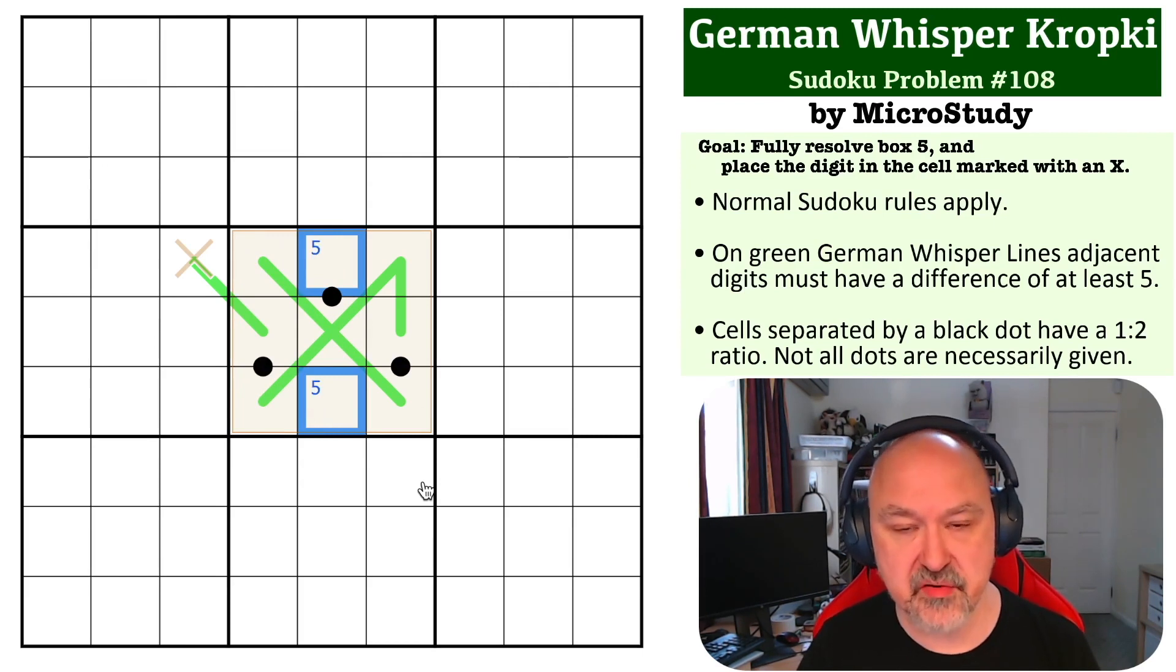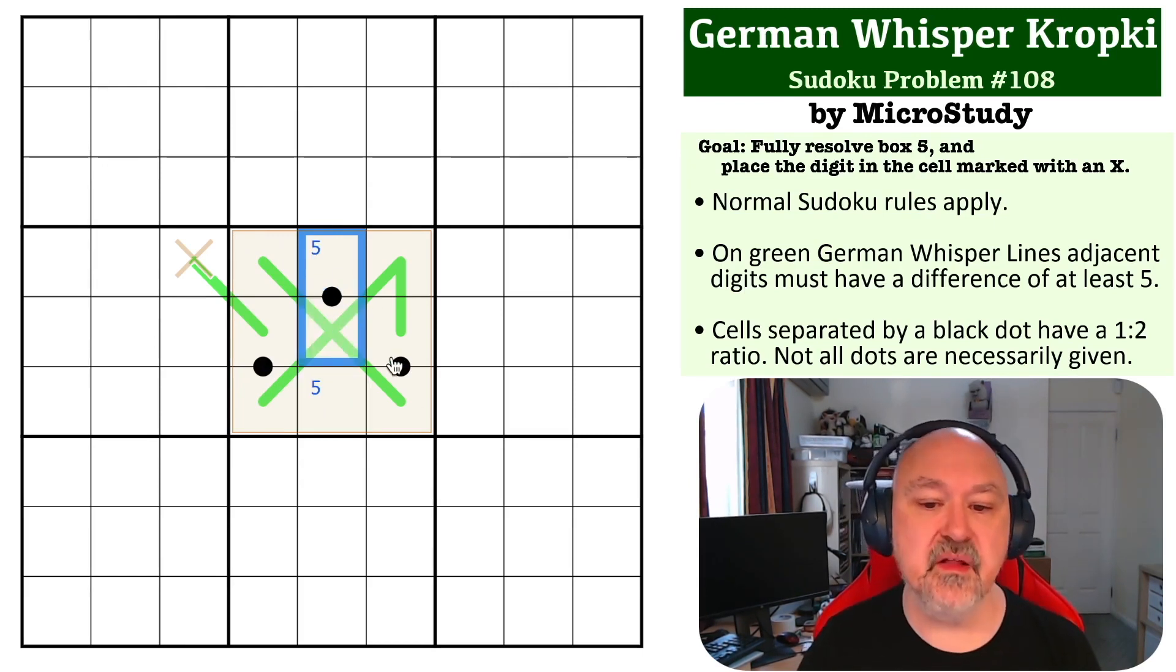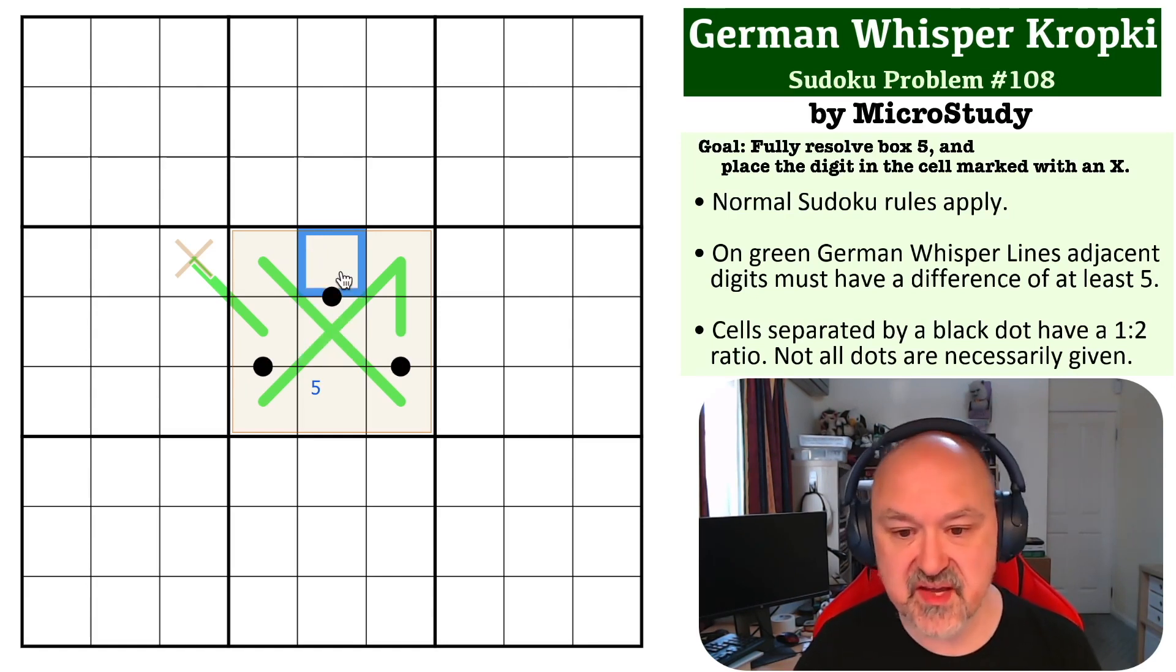So the 5 would have to go in one of those two cells. But there is no valid ratio with 5 using the 1 to 2 ratio because half of 5 is 2.5 and double 5 is 10, neither of which are valid digits. So this becomes the 5.